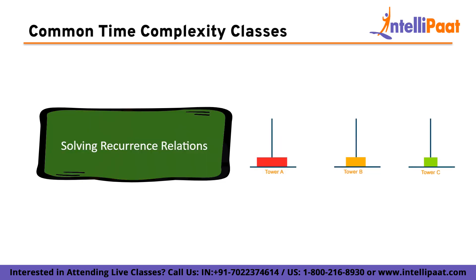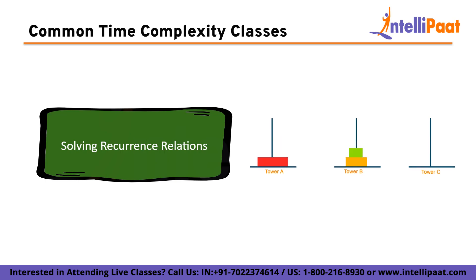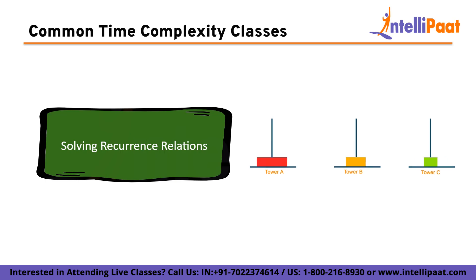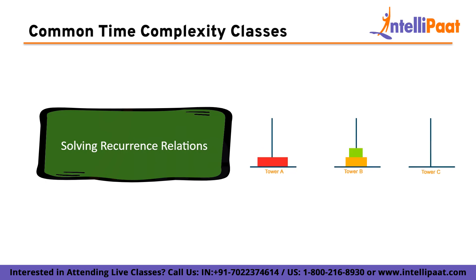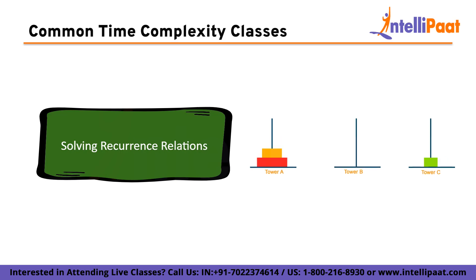Finally, solving recurrence relations. Many algorithms have a recursive or divide and conquer structure resulting in recurrence relations that describe the time complexity. Solving these relations involves finding a closed form solution expressing the time complexity in terms of the input size. Techniques such as substitution, iteration, and the master theorem can be used. This is particularly useful for algorithms like merge sort, quick sort, and binary search.